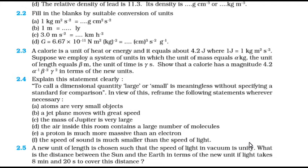Now let us see the next question 2.5: A new unit of length is chosen such that speed of light in vacuum is unity. What is the distance between the sun and the earth in terms of new unit if light takes 8 minutes and 20 seconds to cover this distance? So let us try to solve this.